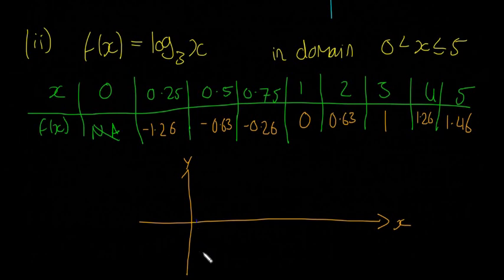So 0.25 is going to be about there at -1.26, so that's going to be our first point. And 0.5 then is -0.63, so about there. 0.75 is -0.26. At 1 and 0, this point is here. 2 and 0.63, so 2 is about out here. At 3 and 1, so 3 will be out here, 1 will be up here. 4 is 1.26, so 4 will be about here. And 5 is 1.46, a little bit higher again.